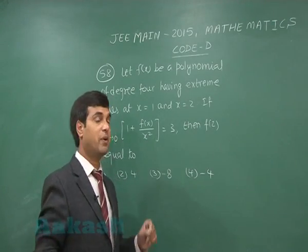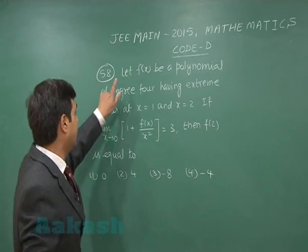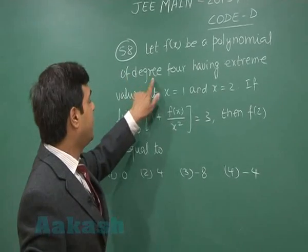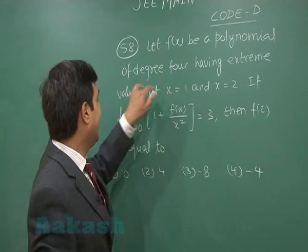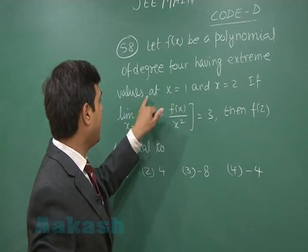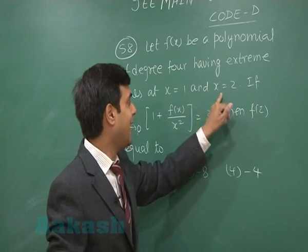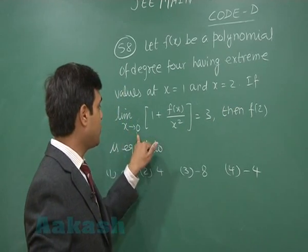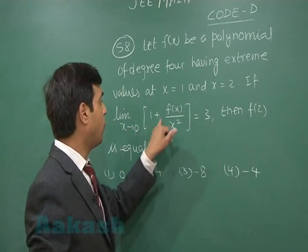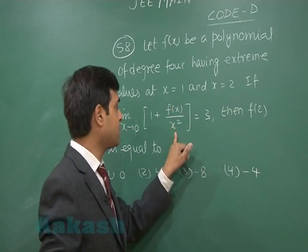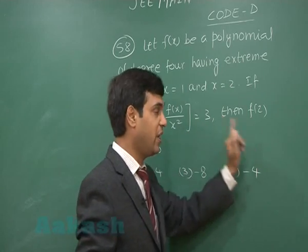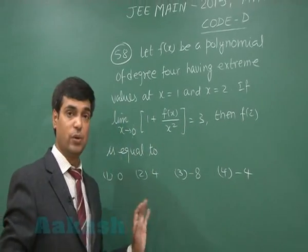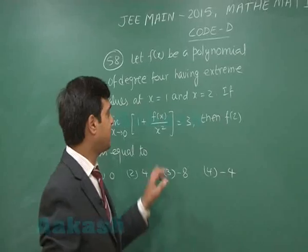Let us go for question number 58. Let f(x) be a polynomial of degree 4 having extreme values at x equals 1 and x equals 2. If the limit as x approaches 0 of 1 plus f(x) divided by x squared equals 3, then f(2) equals — a simple question.